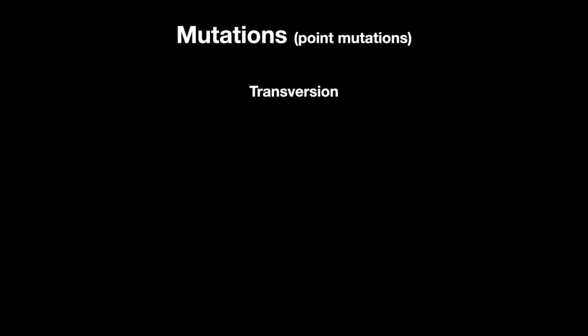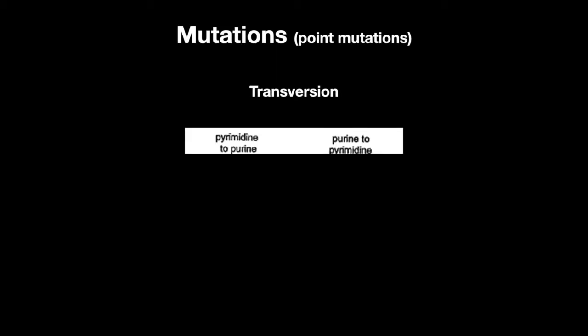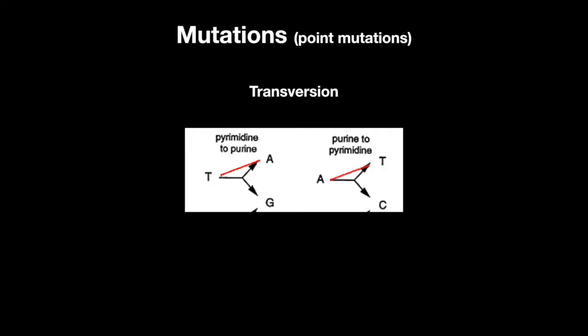A transversion point mutation is a purine to a pyrimidine or a pyrimidine to a purine, A to T, or C to G.